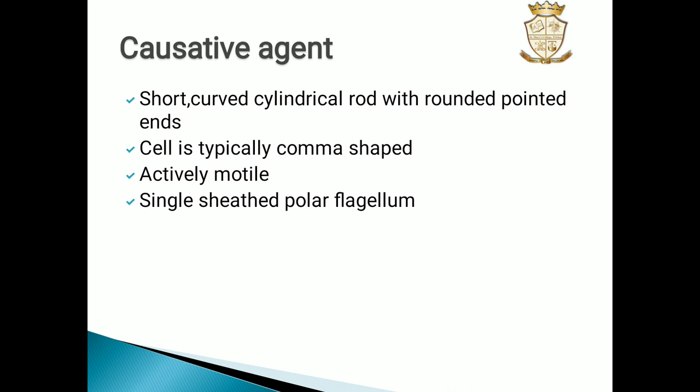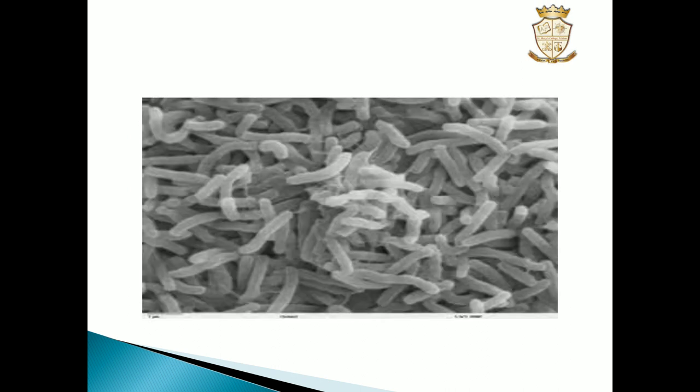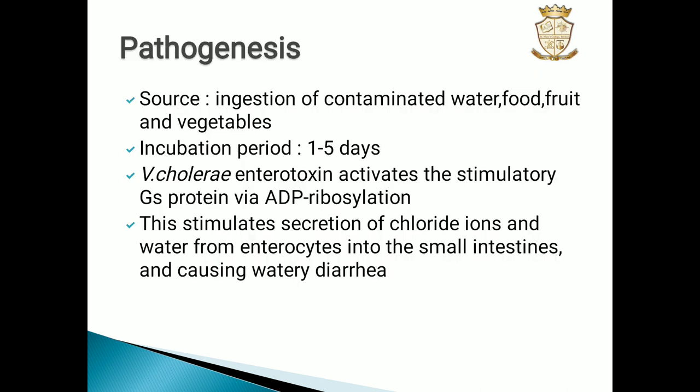The cell of Vibrio cholerae is typically comma-shaped, which gives it its name. It is actively motile with a single sheathed polar flagellum. Here you can see the comma-shaped Vibrio cholerae.